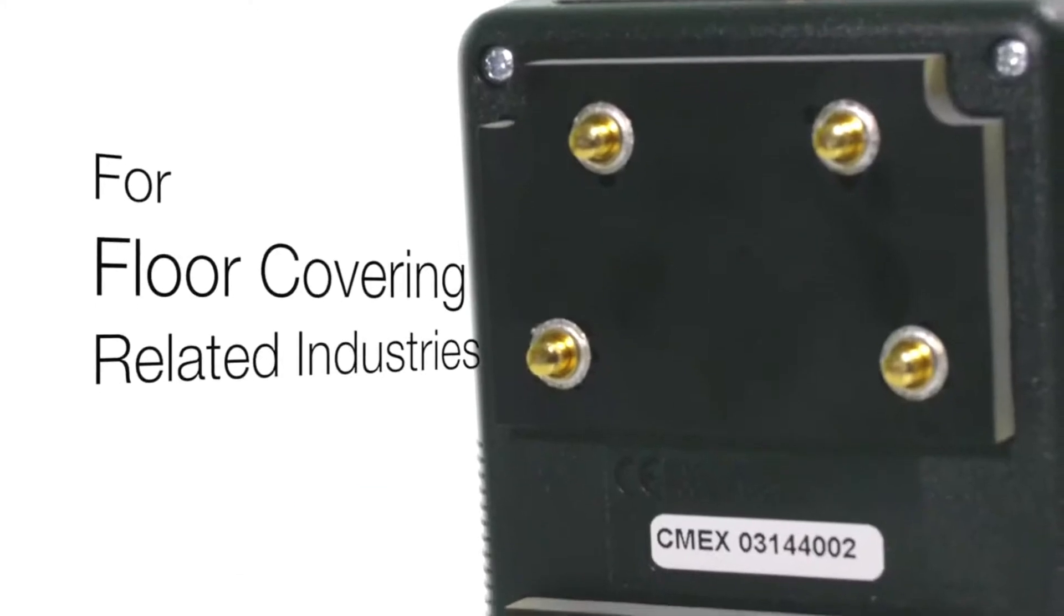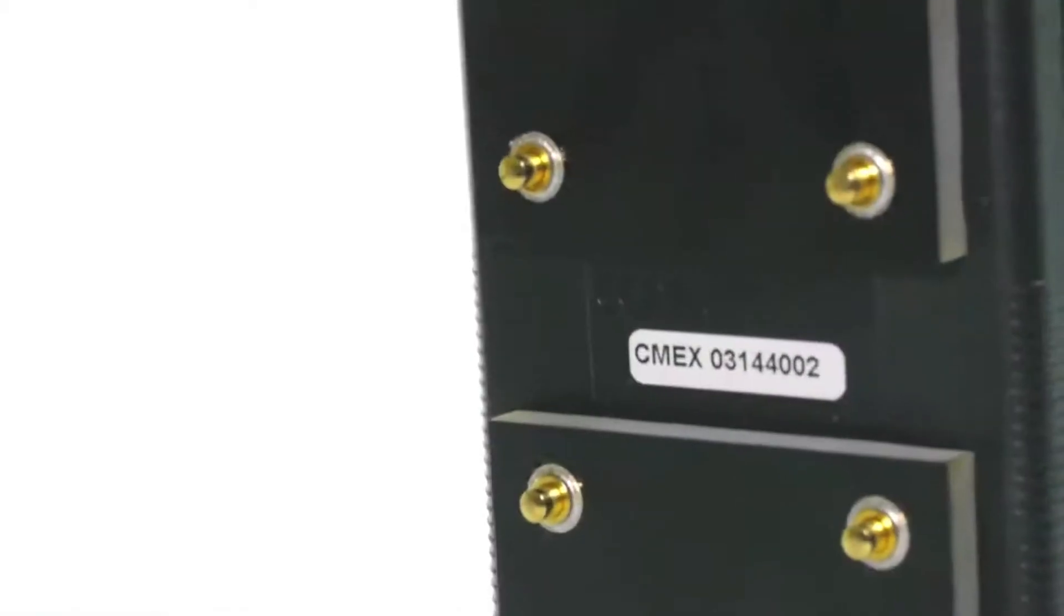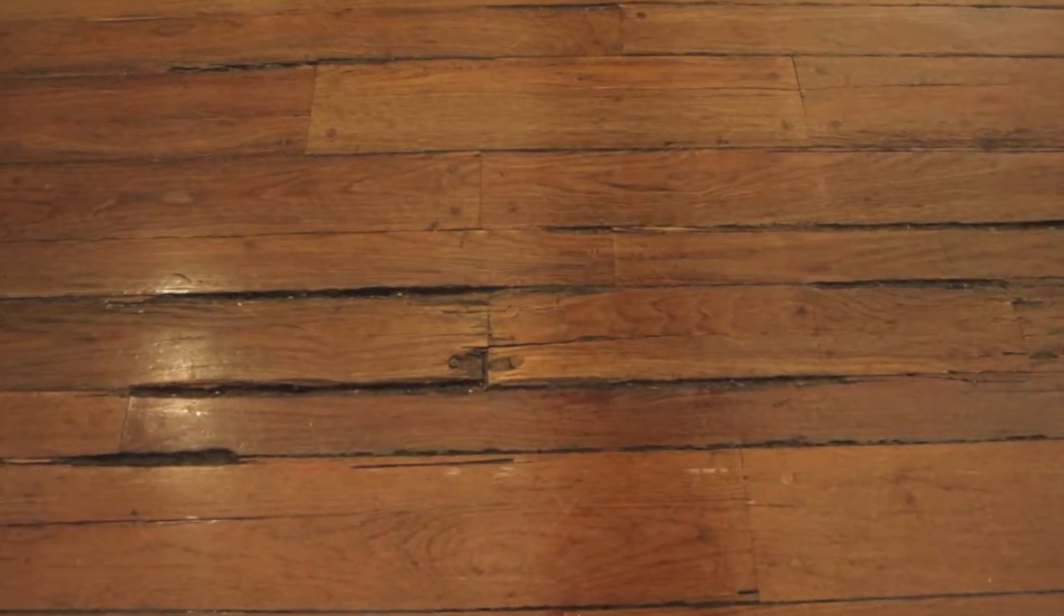The Tramex Moisture and Humidity Testing System for floor covering related industries has been developed to help users avoid moisture related problems in flooring and to identify the cause of problems if they do occur.